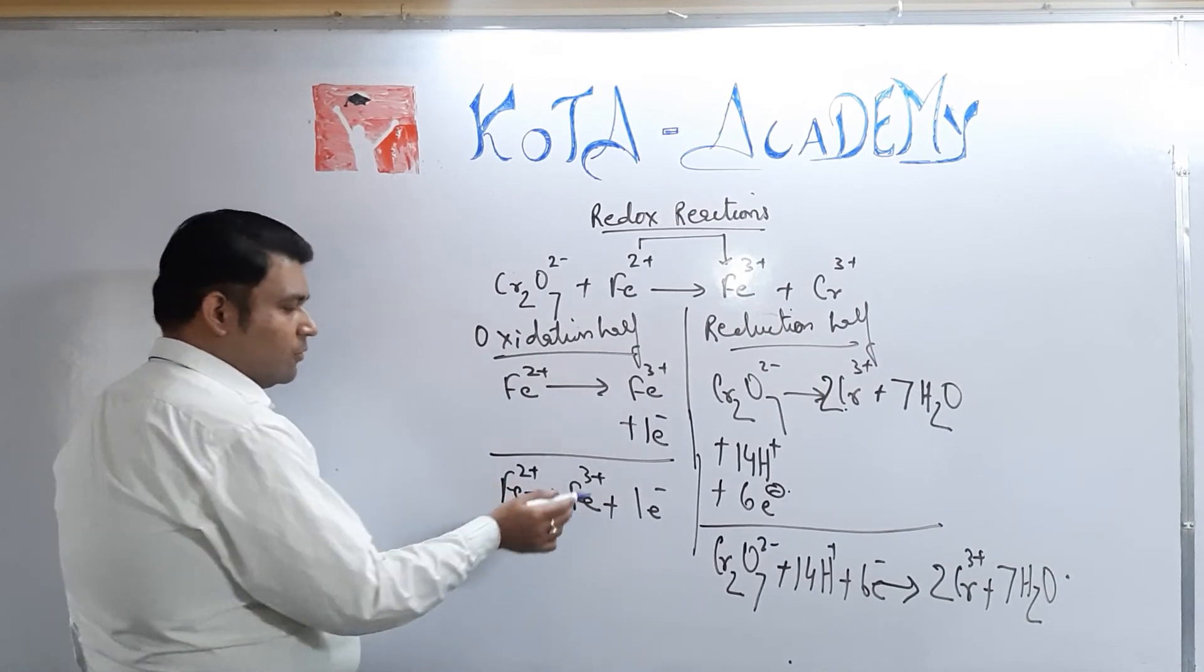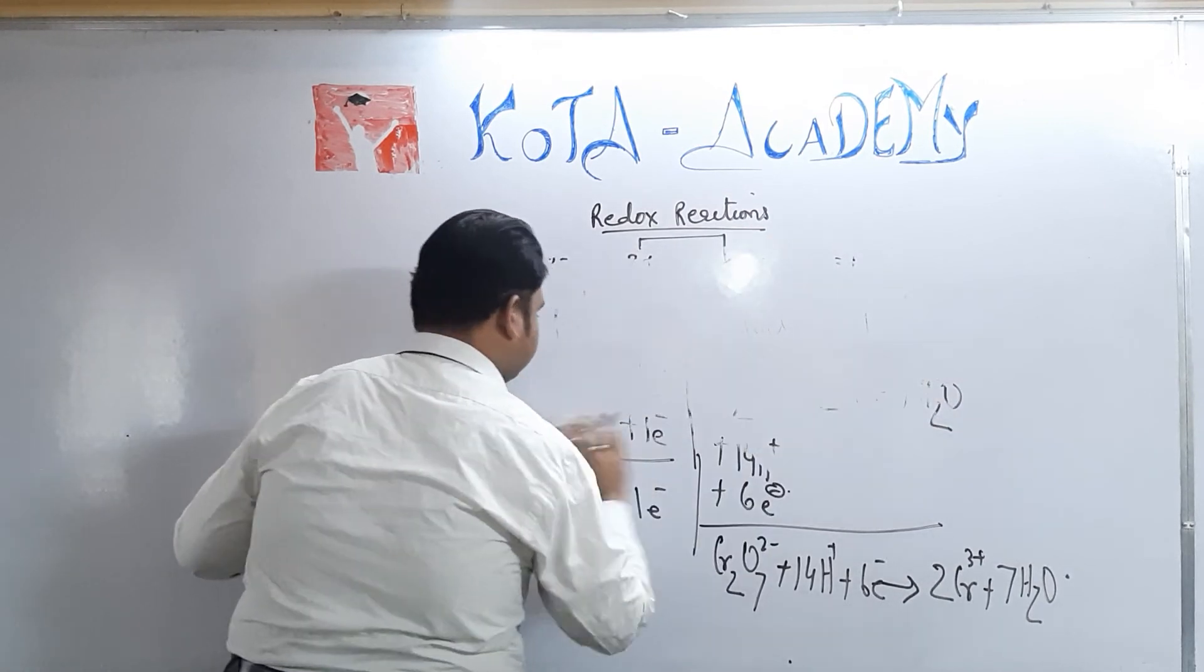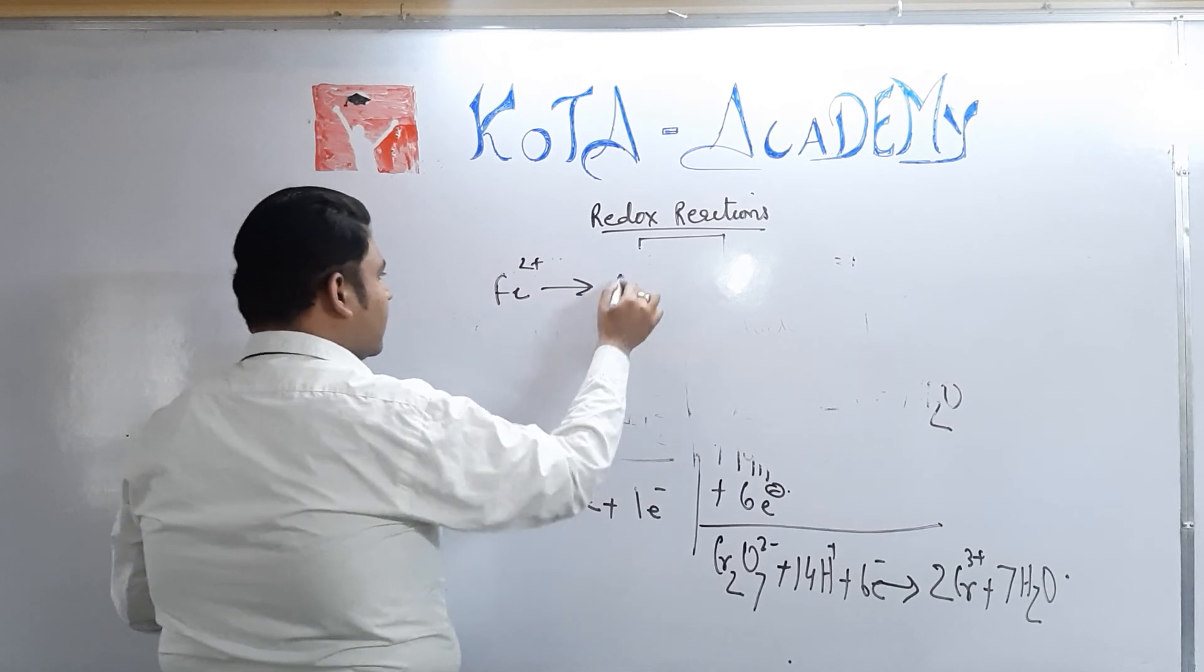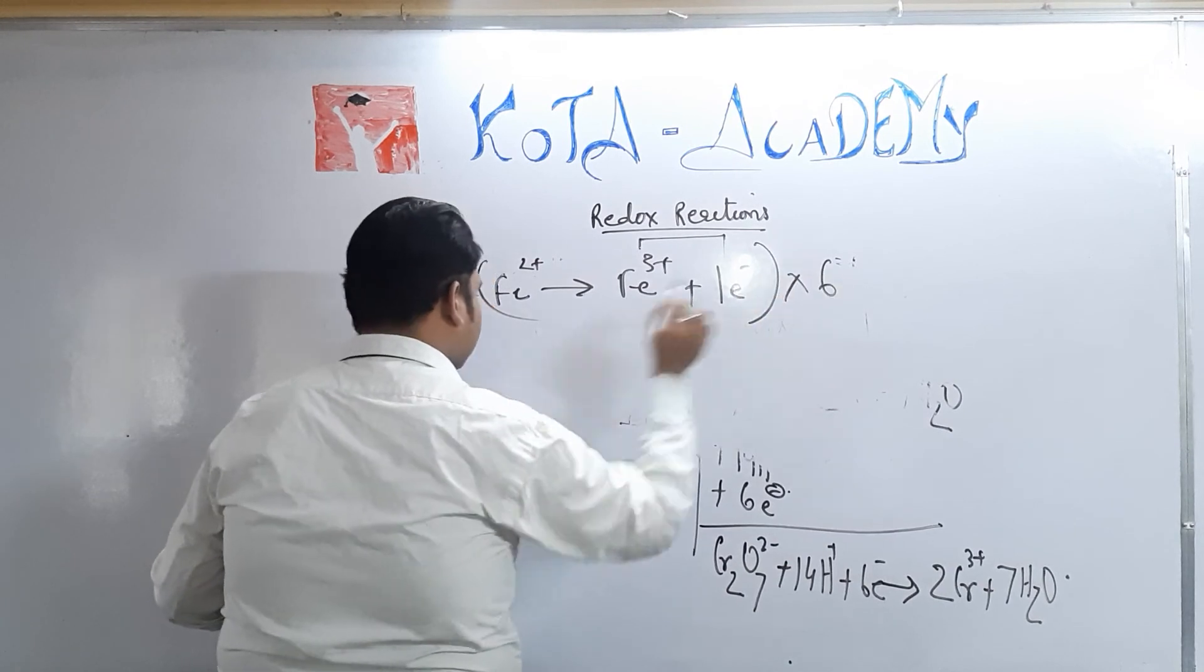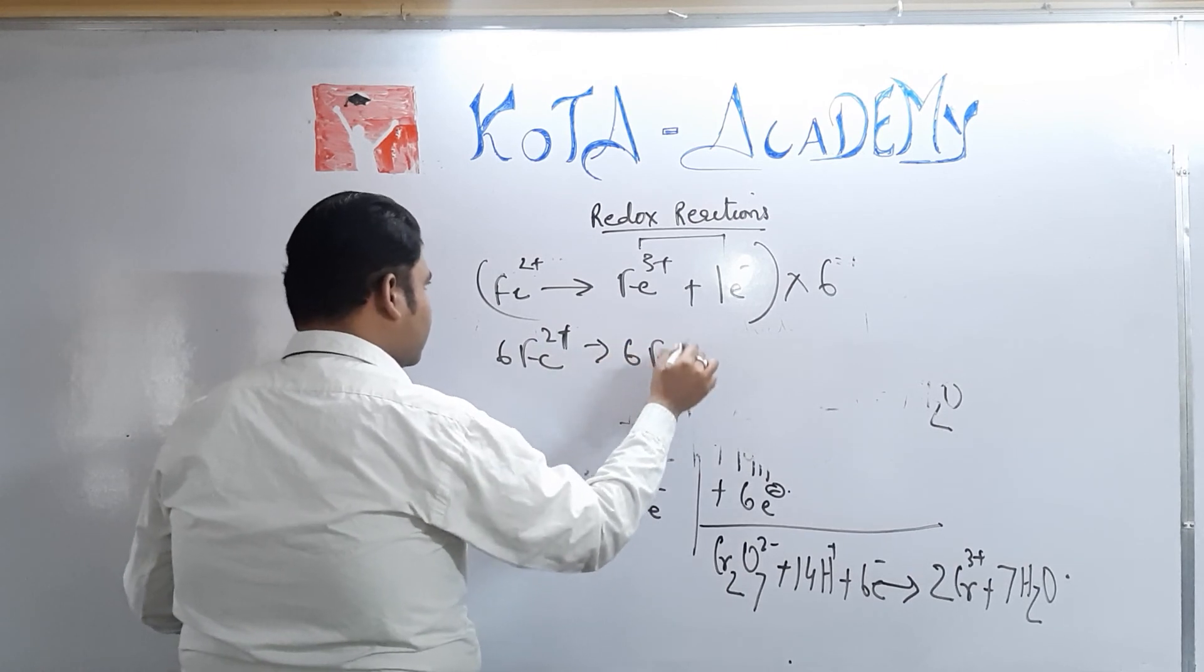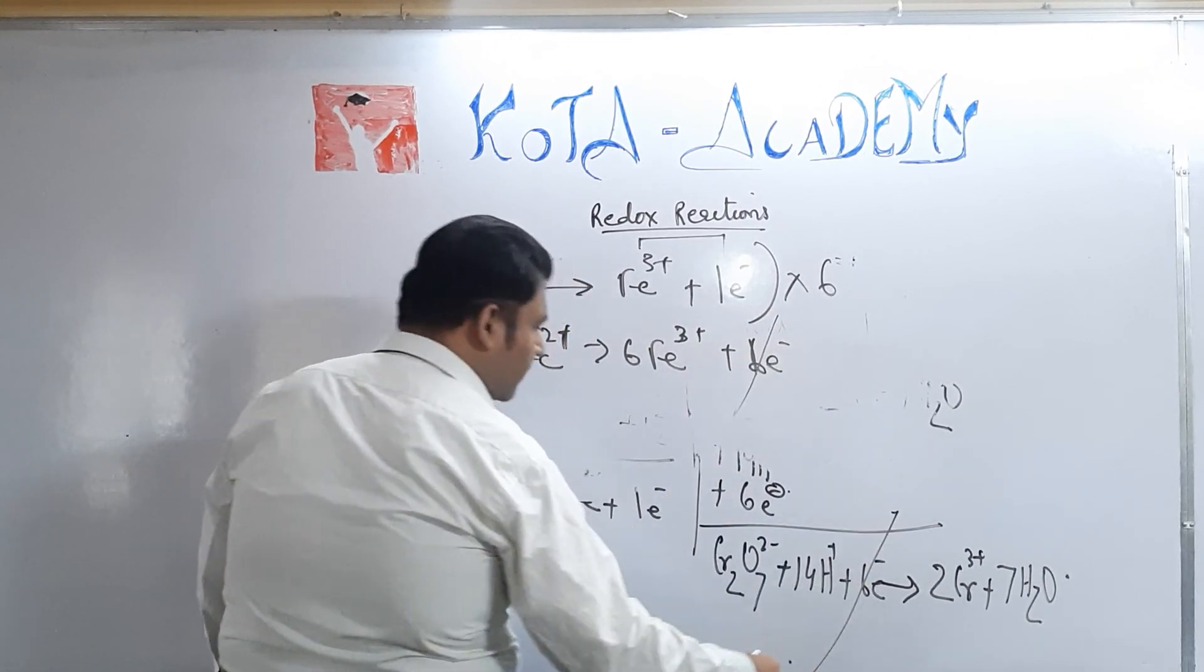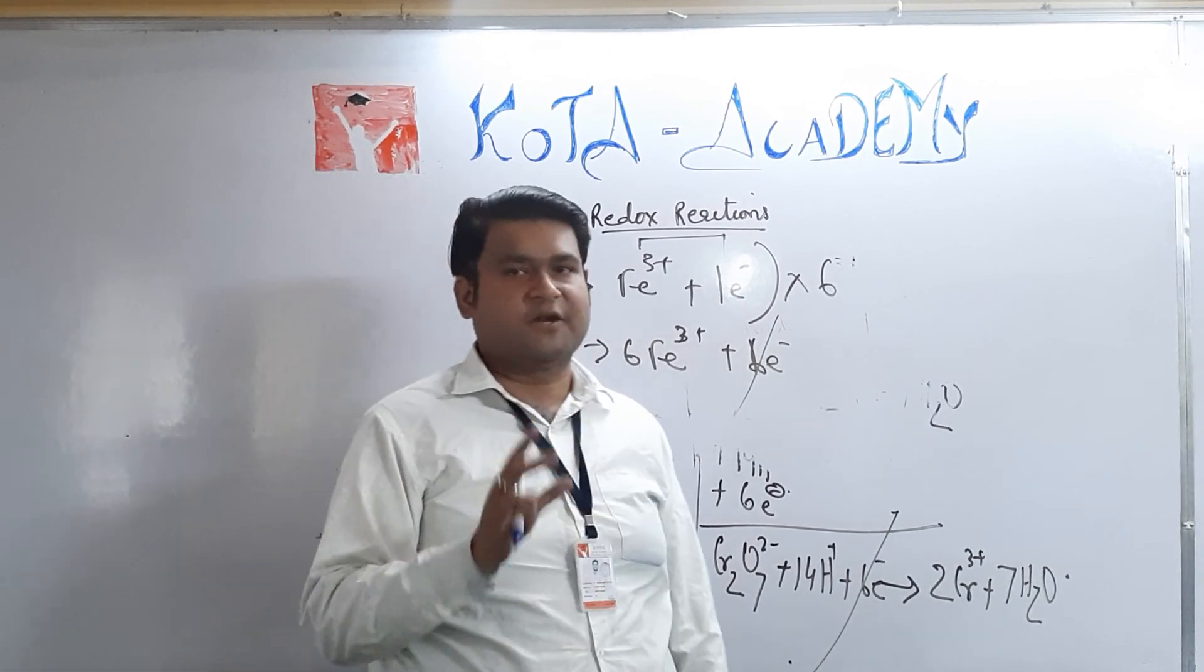Then we need to make the electrons equal. How are we going to do that? Fe2+ gives Fe3+ plus 1 electron. We will make it 6. We will get 6Fe2+ gives 6Fe3+ plus 6 electrons. By which all the 6 electrons would be getting cancelled, then we can mingle the equations and finally we would be getting the resultant balanced redox reaction.